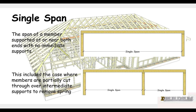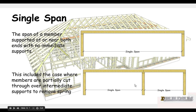A single span is the span of a member supported at or near both ends with no intermediate supports. This includes the case where members are partially cut through over intermediate supports to remove spring. So if a continuous member is cut fully or partially, it becomes two single spans.